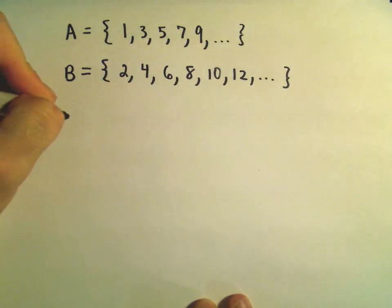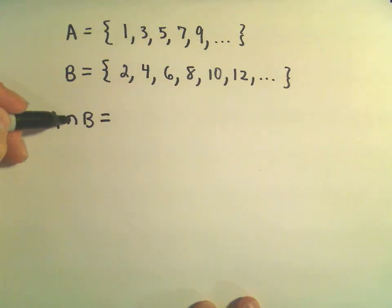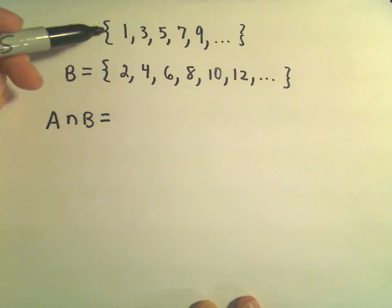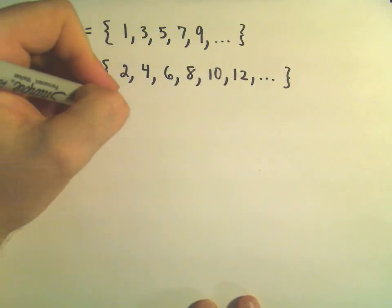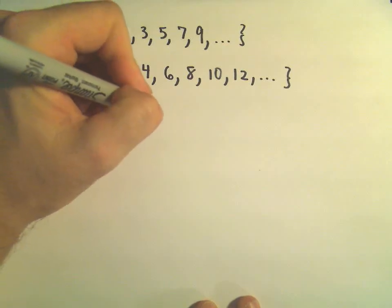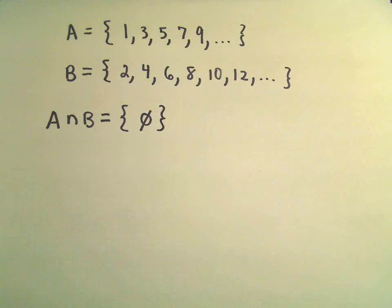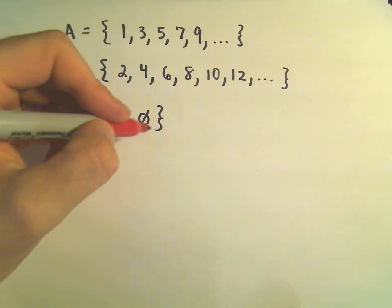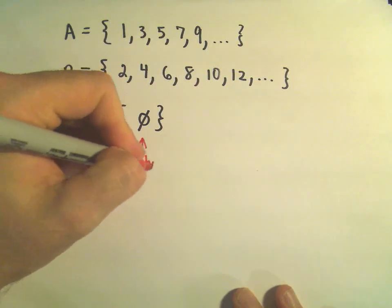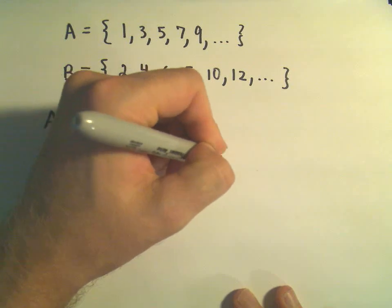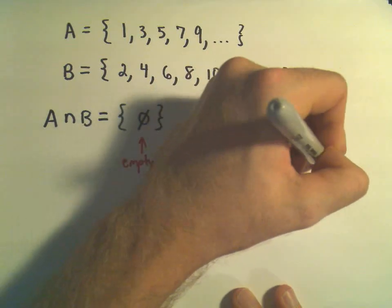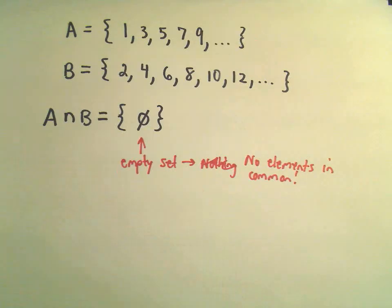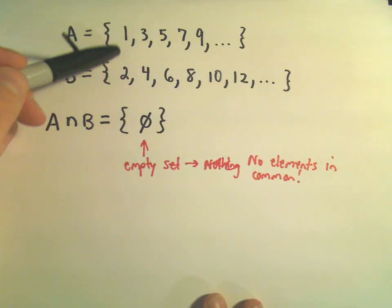So, if we look at the intersection, what elements are both in set A and in set B at the same time? Well, set A only has odd numbers, set B only has even numbers, so there's nothing in common at all. The intersection, and the way we write that is we make a little circle, kind of looks like a 0, with a line through it. And this little symbol stands for what's known as the empty set. The empty set basically says there is nothing, no elements in common. There's no element that belongs to both A and B at the same time.